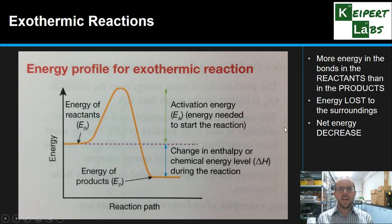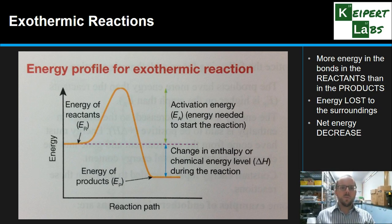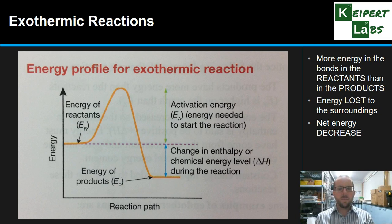A classic exothermic reaction is combustion of a hydrocarbon. For example, we burn natural gas and it releases a very large amount of energy into the surroundings — that's part of why we use it, because we can heat things up with it. So in an exothermic reaction, there is a net energy decrease.